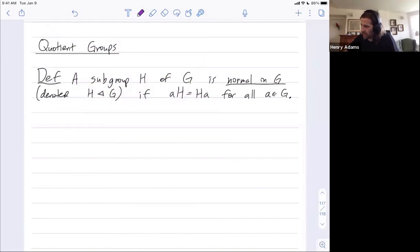The left coset AH is defined as the set of all things of the form AH where little h is in our subgroup capital H. If G is abelian, then any subgroup is normal just because AH is equal to HA for any element little h. But you can also have normal subgroups inside groups G that are not abelian.